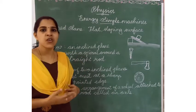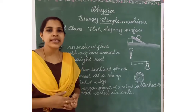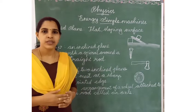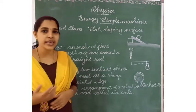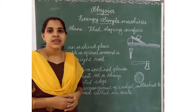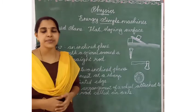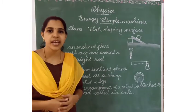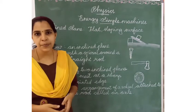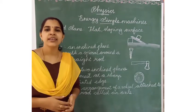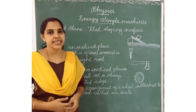What are the types of simple machines? A simple machine is a tool and it makes our work easier. There are 6 types of simple machines: Lever, Inclined Plane, Pulley, Wedge, Screw, and Wheel and Axle.